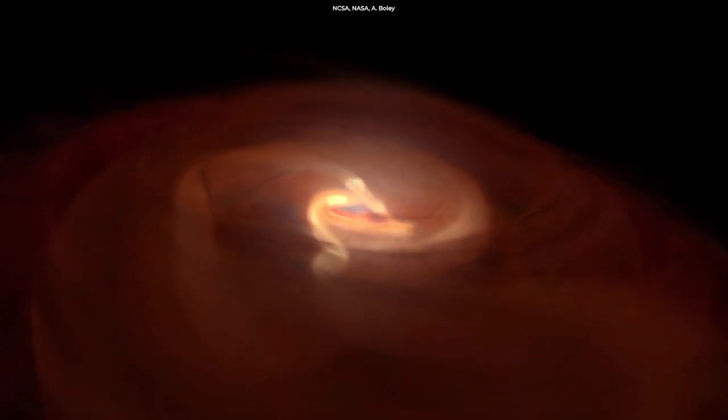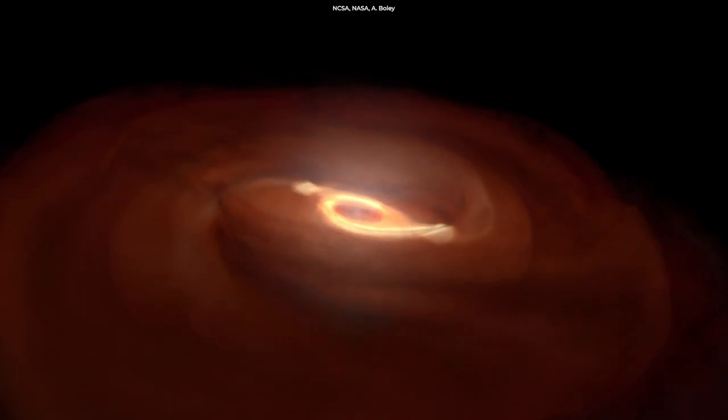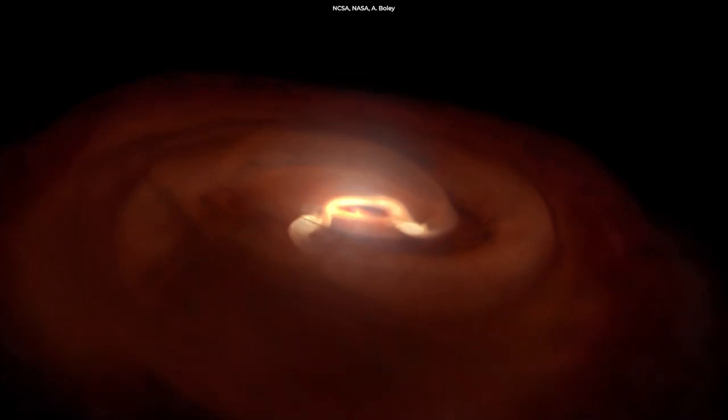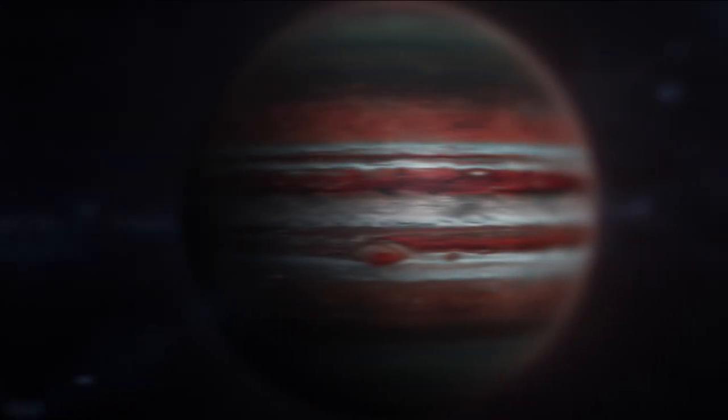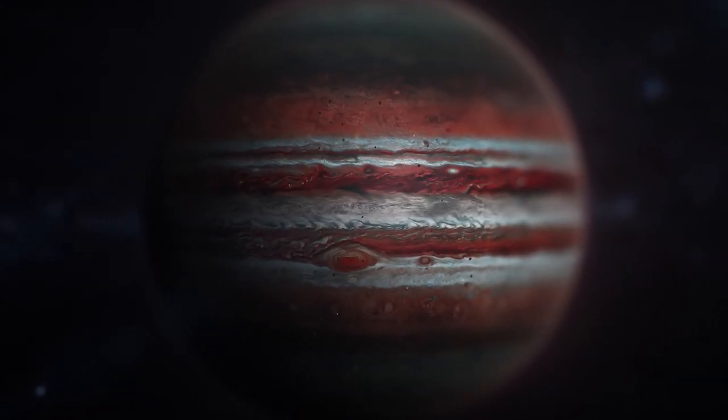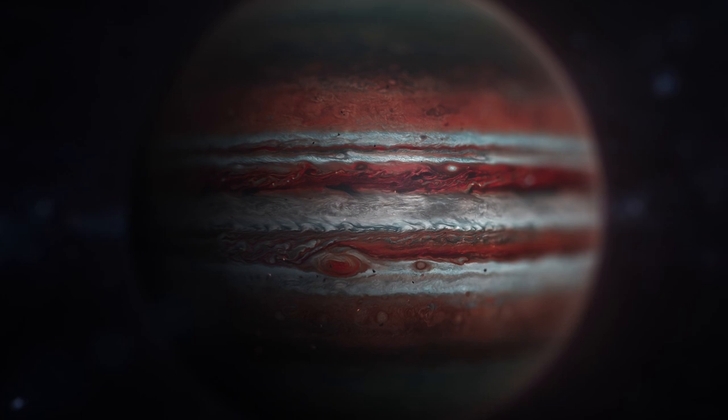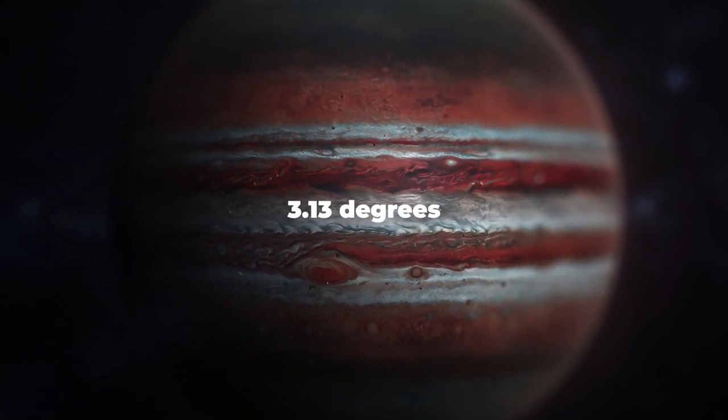However, because the big planetesimals grew much faster than the small ones, they were less likely to have their spin axis disturbed, unlike the smaller worlds. That's why Jupiter's axis is almost vertical. The gas giant is tilted just 3.13 degrees.